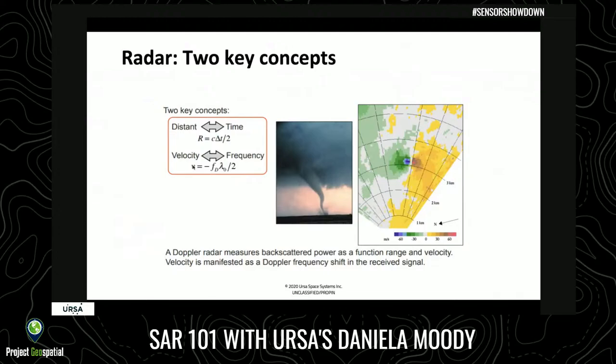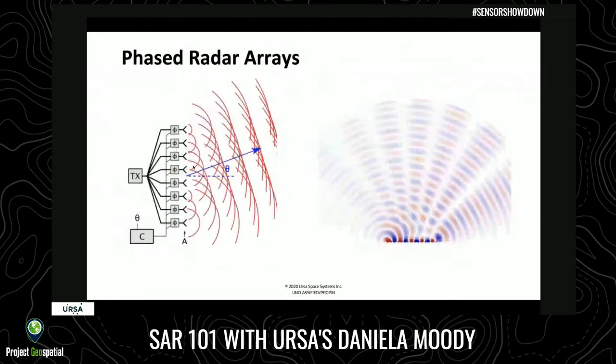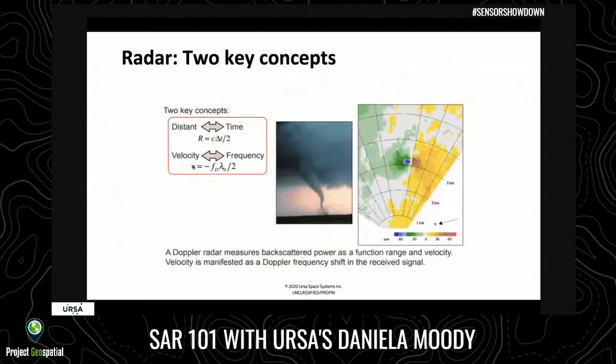Distance and time are the correlated pieces here. The velocity at which something comes towards the radar source or goes away is correlated to frequency. That is how we're able to estimate with a weather radar the direction and movement or speed of a storm cell, its exact position and extent. Hint number two: radar is extremely good at measuring physical or geometric properties of your environment in terms of speed, distance, presence, and movement. It can't tell you whether a car is red or blue, but it can tell you if a car is in a particular place.